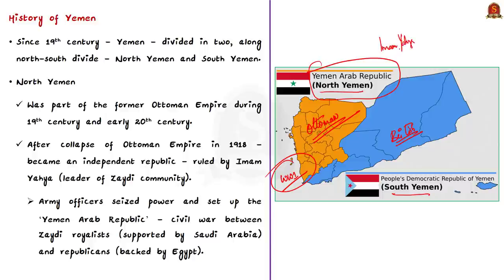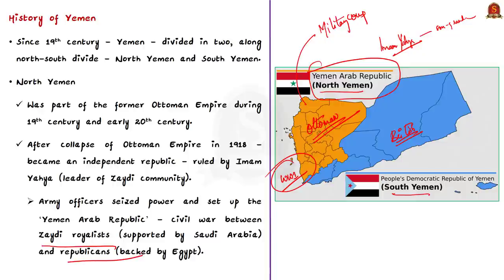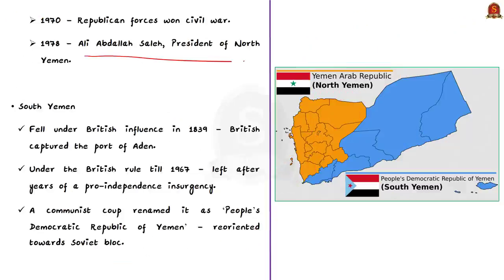After Imam Yahya, his sons and grandsons succeeded the rule. But army officers seized power and set up the Yemen Arab Republic — essentially a military coup. This sparked a civil war between Zaydi royalists and Zaydi republicans: those supporting the imams versus those supporting the army. The royalists were supported by Saudi Arabia and the republicans by Egypt. In 1970, the republican forces won the North Yemen war, and as a result Ali Abdullah Saleh, a Zaydi republican, became president of North Yemen in 1978.